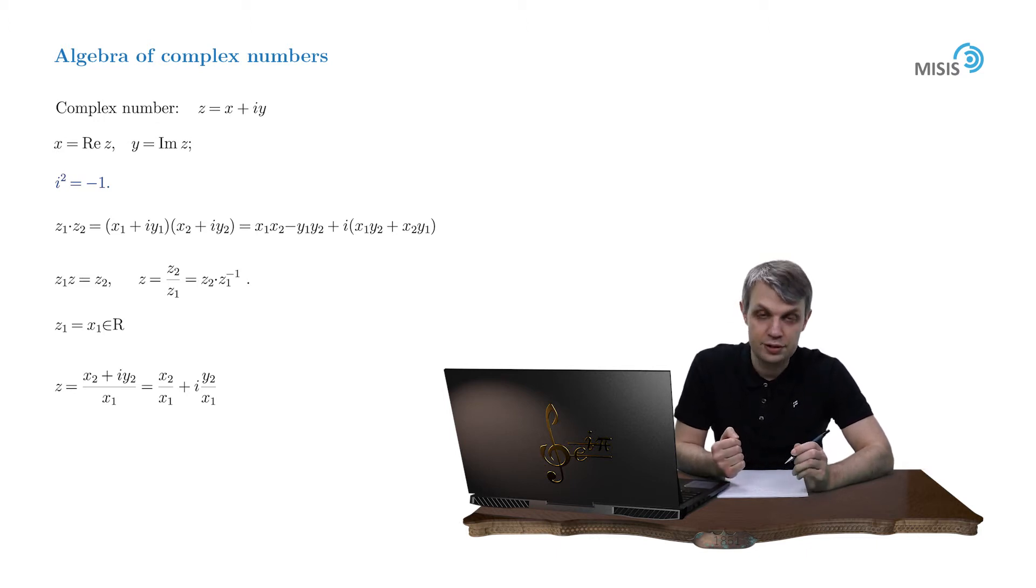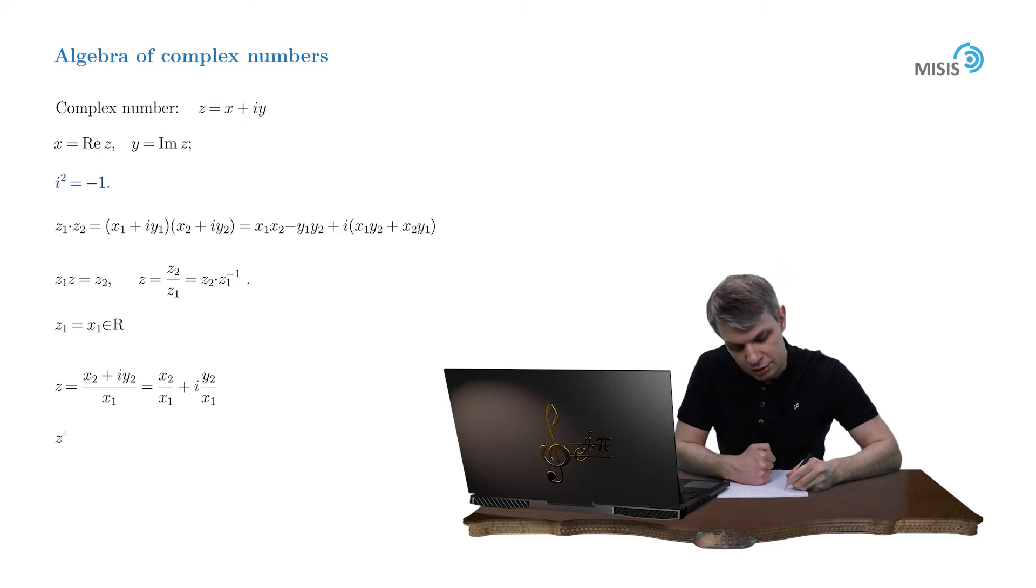Before proceeding, let's introduce one more important notion. Suppose you have a complex number z which is equal to x plus iy. Then we introduce the complex conjugate of z which by definition is equal to x minus iy. The important property of these two complex numbers is that their product gives real number. Indeed, z times z star is equal to x squared plus y squared.